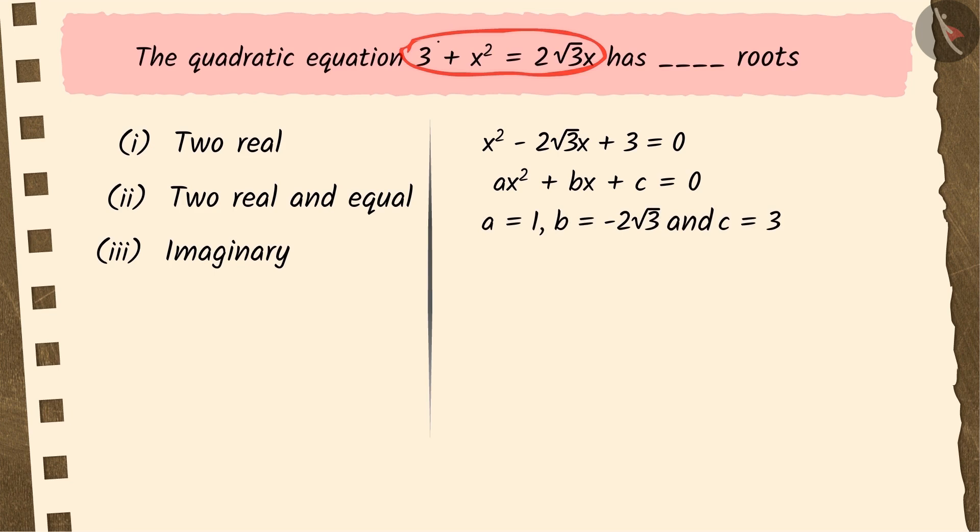In order to know the nature of roots, we have to discuss the discriminant of the quadratic equation. On substituting the values of a, b, and c in b² - 4ac, we get 0. Can you tell what does it mean?